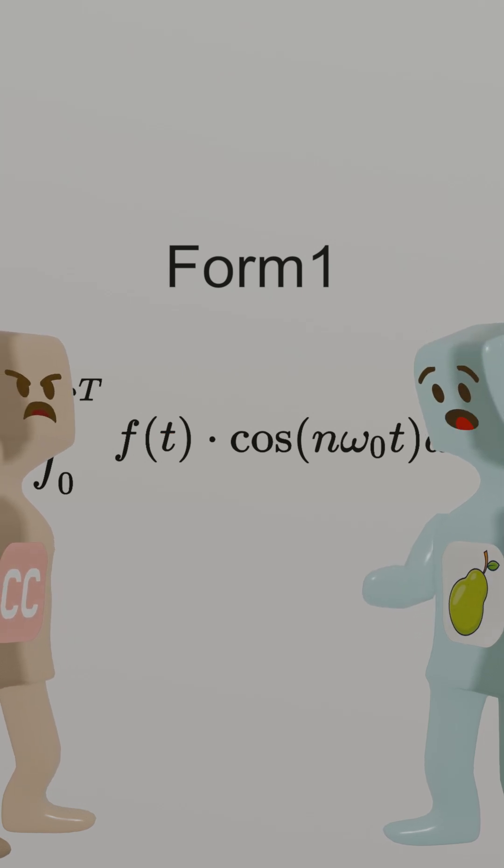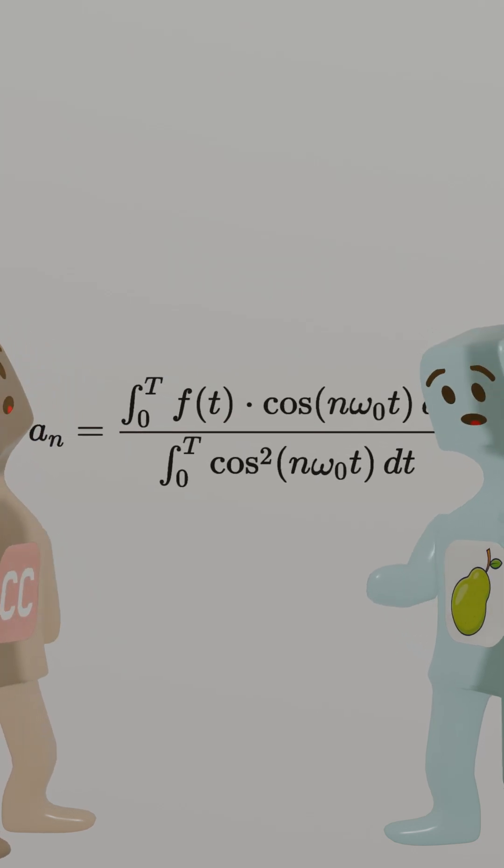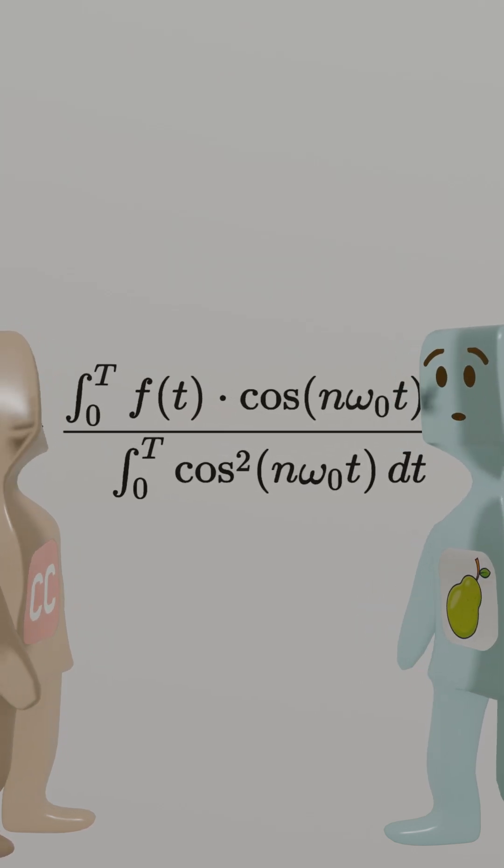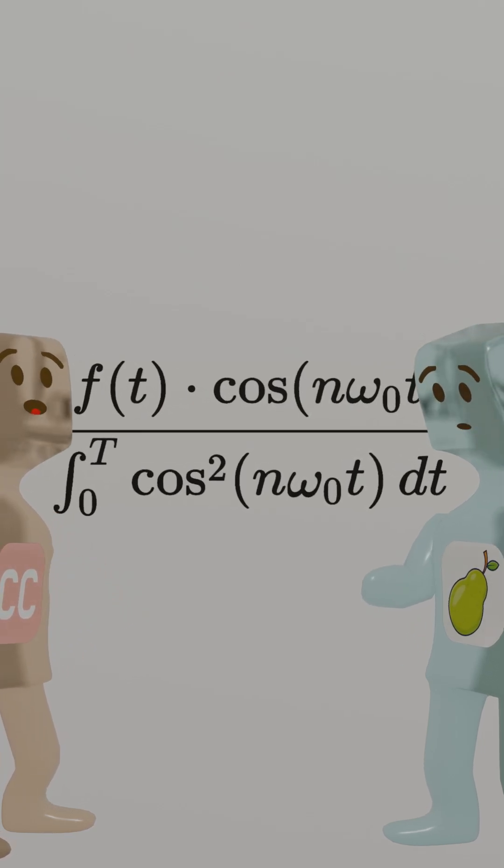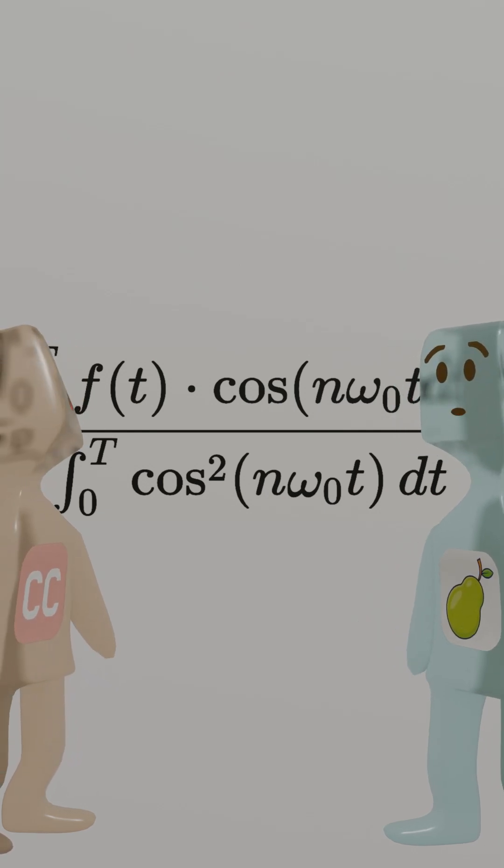A simple inner product can only reveal the trend of similarity, but it cannot directly compare numerical values. What does that mean? Therefore, we must standardize our comparison tool. It's very simple. We make the similarity of a sine wave with itself equal to 100%. This gives us a fair baseline for comparison.